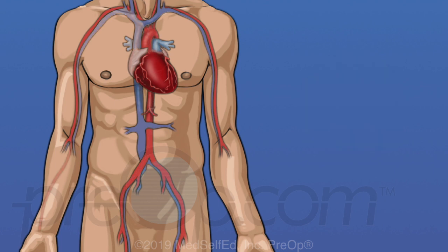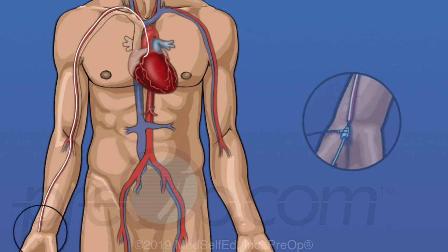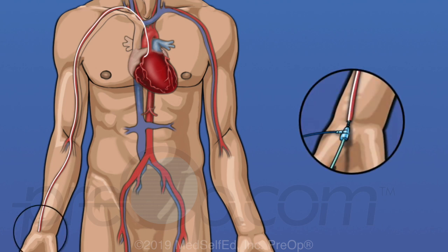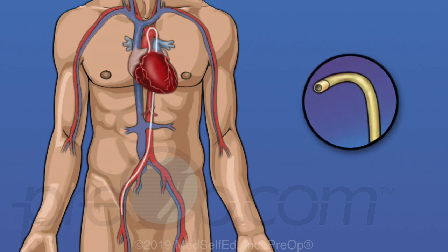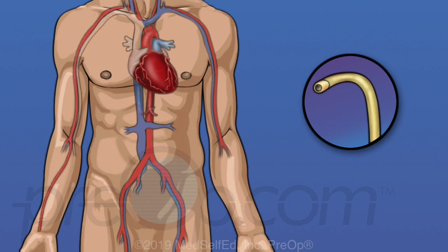The radial artery in the arm is another site where a catheter can be placed. The catheter is inserted at the wrist, then guided to reach the heart. Which artery is selected for the procedure depends on your personal situation and the experience and training of your cardiologist.